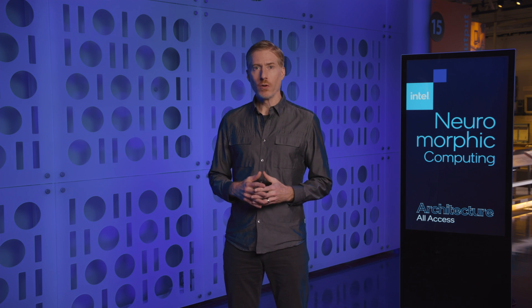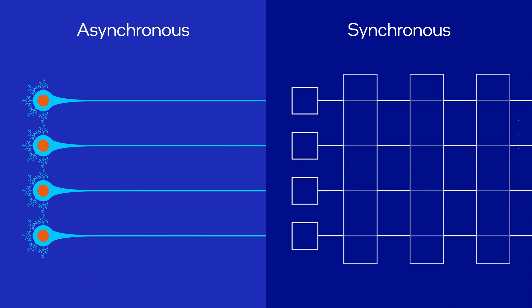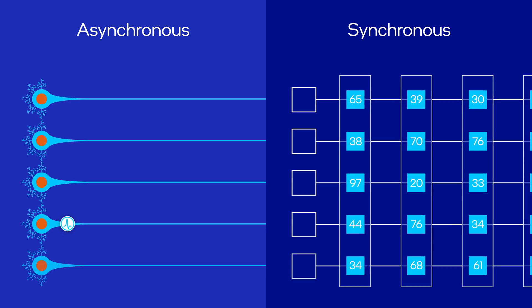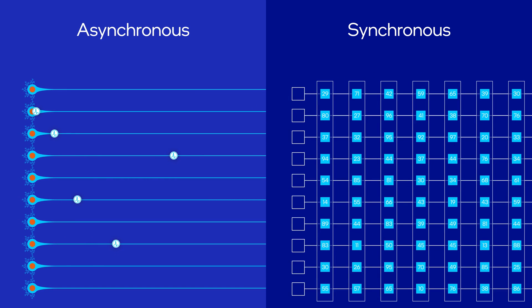This may seem obvious, but to truly exploit this principle, a hardware implementation needs to respond to unpredictable neuron activations immediately, which implies extremely fine-grained parallelism and neurons that asynchronously represent their activations as events in time, rather than as numbers in a synchronously processed vector. This is what biological neurons do using spikes, and it's what we aim to implement in neuromorphic chips.